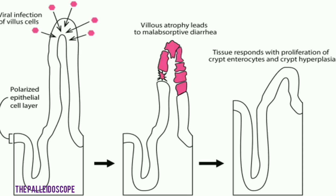This diagram shows how TGEV works. Viral infection of villus cells (the villi) occurs, then villus atrophy leads to malabsorptive diarrhea. Tissue responds with proliferation of crypt enterocytes and crypt hyperplasia. Since there is lesser absorption due to atrophy of the villi, there is lesser absorption of water, and so diarrhea is constant.